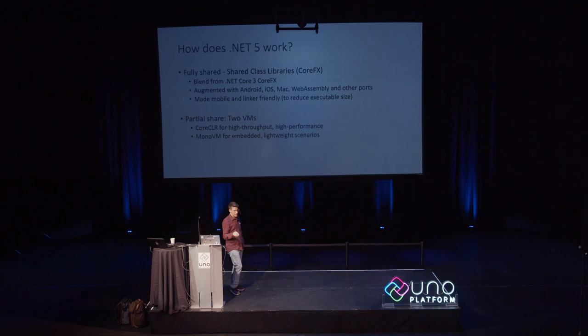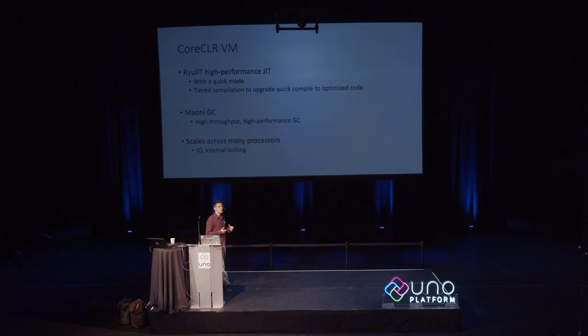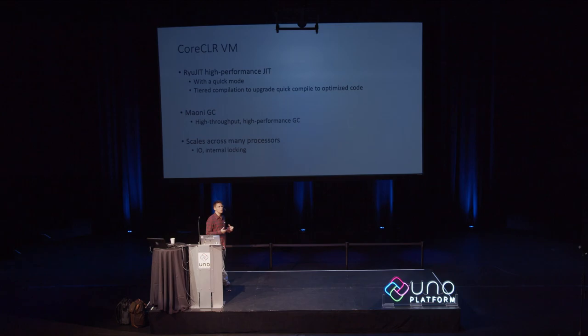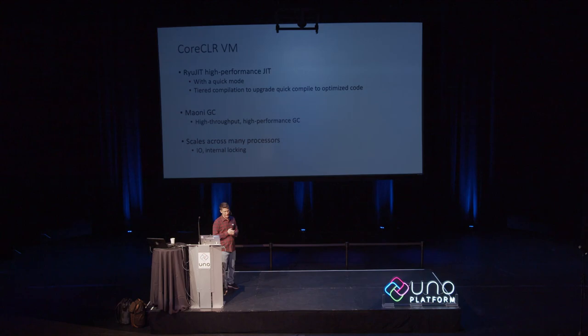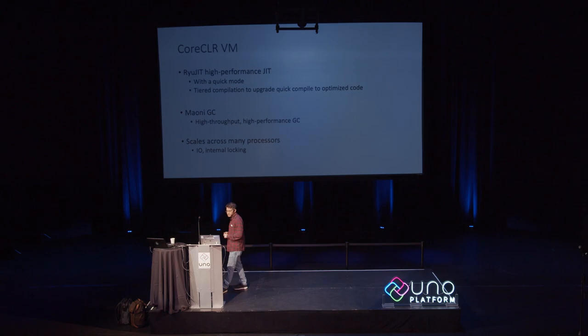In .NET 5 we're going to have two VMs. The CoreCLR VM — used today with .NET Core — is best for server or desktop workloads requiring high-performance JIT. It supports tier compilation, has the scalable multiprocessor background garbage collector, and scales almost linearly to 32 CPUs. These fantastic capabilities come at a cost in size, so they're probably not what you need on a mobile device with limited RAM.